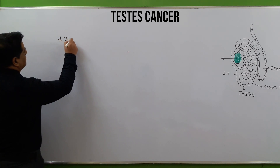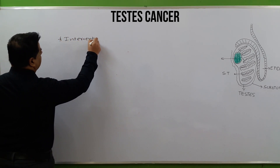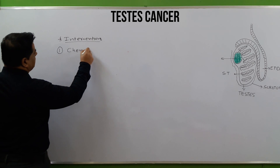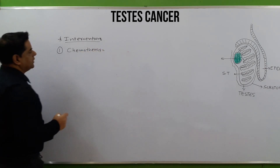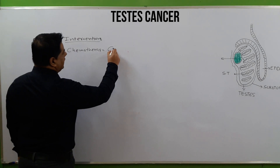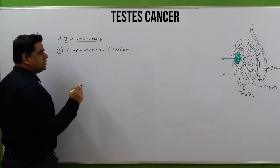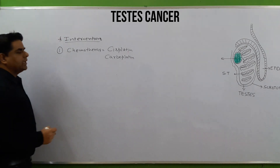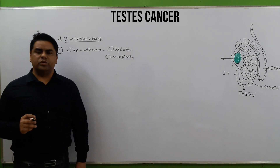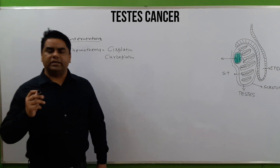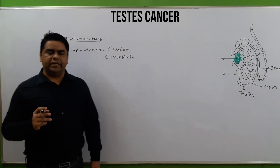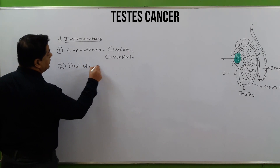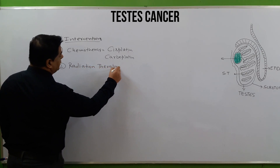Interventions for testicular cancer include chemotherapy using platinum-based drugs such as cisplatin and carboplatin, as well as other chemotherapeutic agents like vincristine. Following chemotherapy, radiation therapy can also prove beneficial.